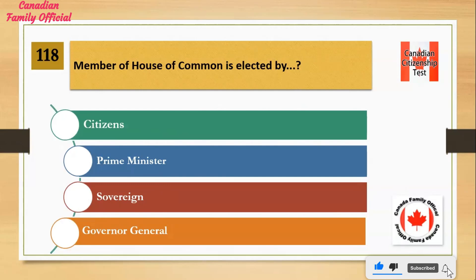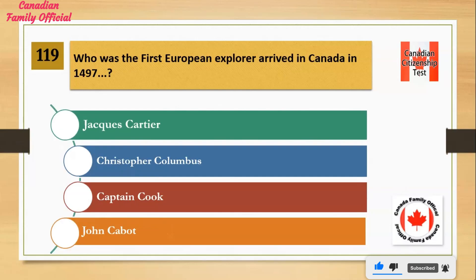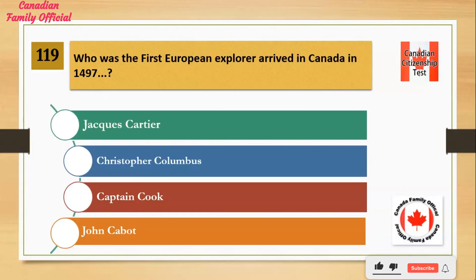Members of the House of Commons are elected by: Number 1: Citizens. Number 2: Prime Minister. Number 3: Sovereign. Number 4: Governor General. And the answer is Citizens.